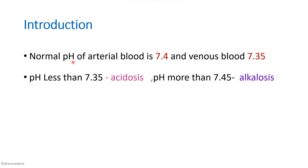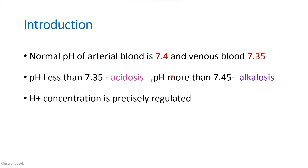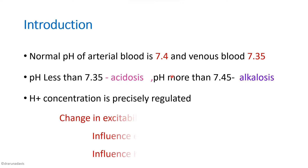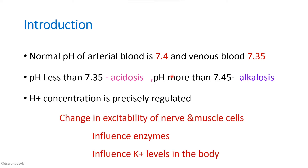This is such a narrow range, which means H+ concentration is precisely regulated. Why should the body be so particular in regulating H+ concentration? That is because changes in H+ can affect the excitability of nerve and muscle cells, influence enzyme activity, and also influence potassium levels in the body. That is why pH is highly regulated inside the body.